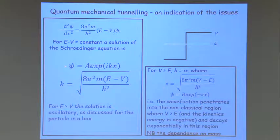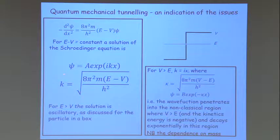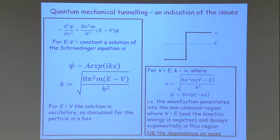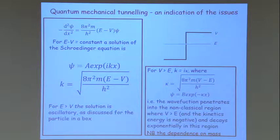Let's look at the region where E is greater than V. We try a solution psi equal to A times the exponential of iKx. K can be obtained from the Schrödinger equation as proportional to the square root of 8π²M(E−V)/h². Since E is greater than V, the solution is oscillatory — we can represent it as a sum of sine and cosine functions, just as for a particle in a box.